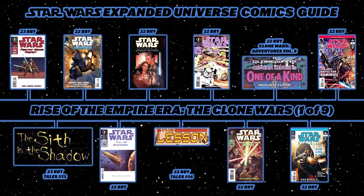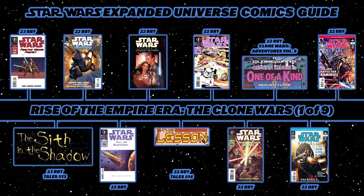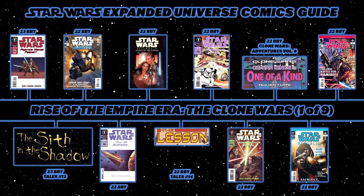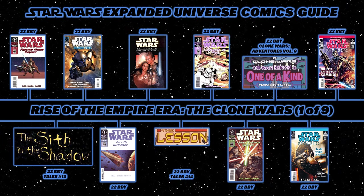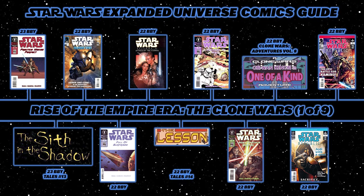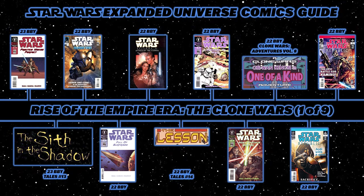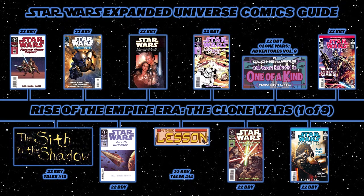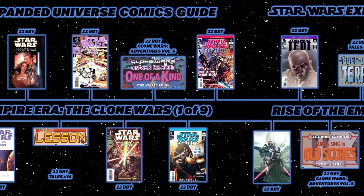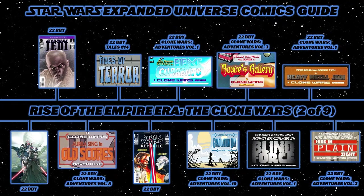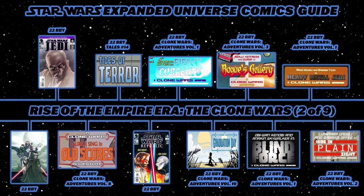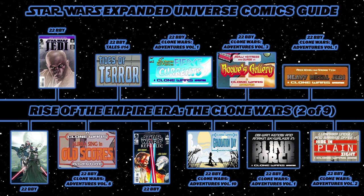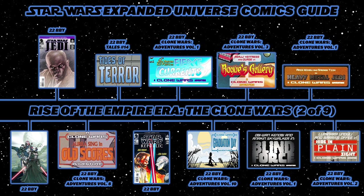We move into the Clone Wars Adventures digest volumes, beginning with One of a Kind from Clone Wars Adventures Volume 8. Back to Republic, issue 49 has Sacrifice, and issue 50 has the self-contained story The Defense of Kamino. Continue with Republic: The New Face of War, issues 51 and 52, seeing Obi-Wan and Anakin travel back to Naboo with ARC Trooper Alpha-17.